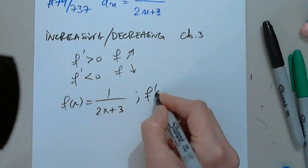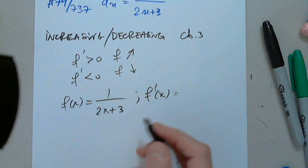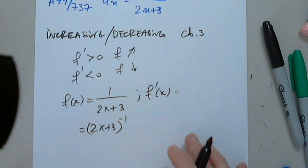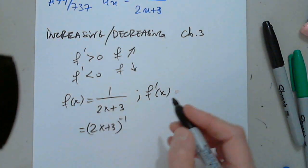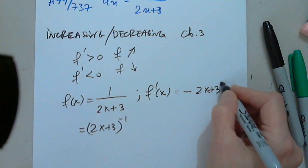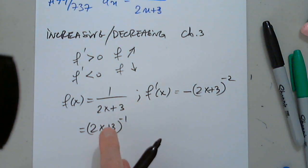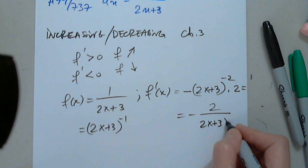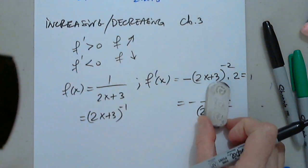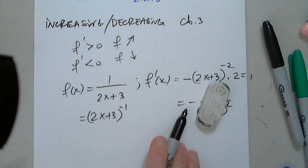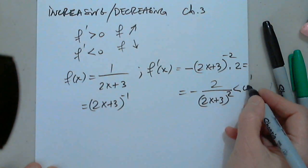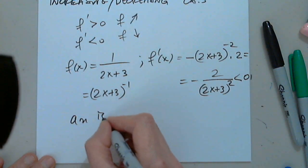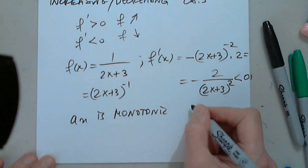I'm going to treat this as a function: let f of x equal 1 over (2x + 3), which we rewrite as (2x + 3) to the negative 1. Differentiating using the chain rule: bring down the power, subtract 1, times the inner function prime which is 2. So f prime of x equals negative 2 over (2x + 3) squared. Since the denominator is always positive and there is a minus in front, this is always less than zero. Therefore a sub n is monotonic decreasing.